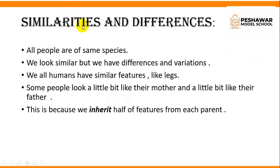Now we will discuss similarities and differences. All people are of the same species — we look similar, but we have differences and variations. We all have two legs, two arms, one nose, and two eyes, but we have different features. Some people look a bit like their mother and a bit like their father. This is because we inherit half of our features from each parent. Inherit means to receive something.